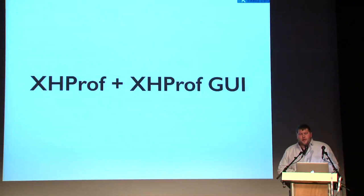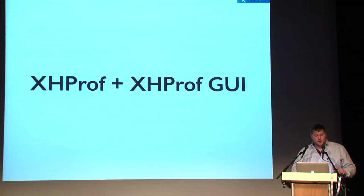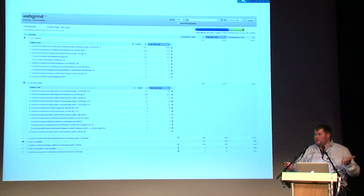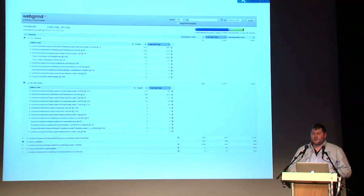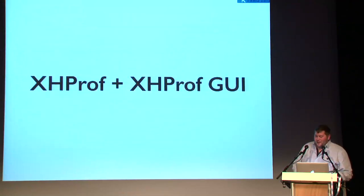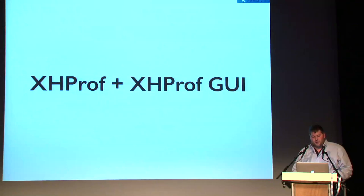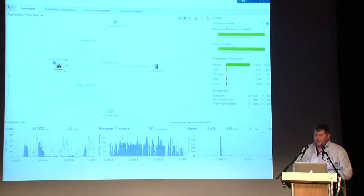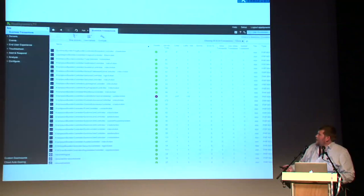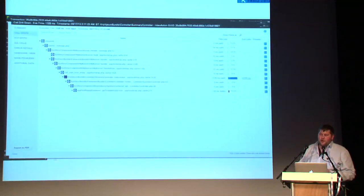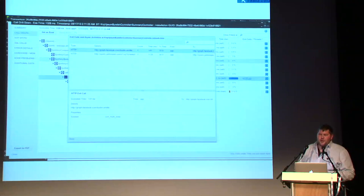xhprof and xhprof GUI allow you to do something similar but are really built for running in production. xdebug adds around 200% overhead in dev environments so you don't want it in production. xhprof gets you the same insights in production. The company I work for, AppDynamics, does application performance monitoring for production — it figures out what healthy performance looks like for each controller, and when things break it tells you what's wrong, where you're spending time, and what external calls you're making to web services and databases.